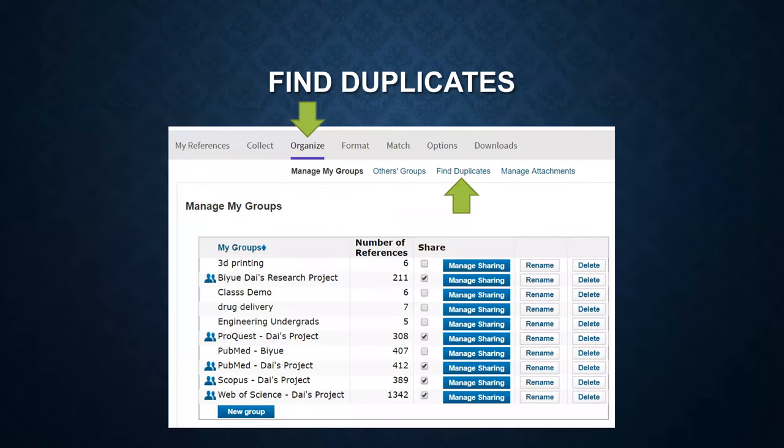Now I'm going to show you how to find duplicates. Still under the Organize tab, click on Find Duplicates.